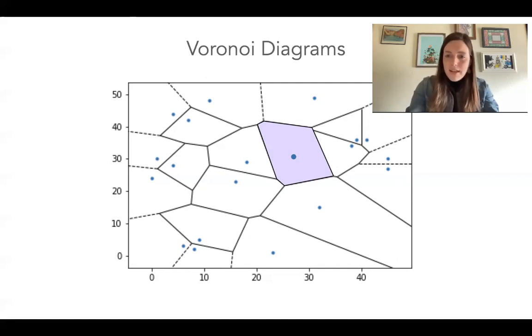And so Voronoi diagrams live naturally. For example, if all these sites were grocery stores and I lived in the lavender shaded region, I would go to the grocery store that's the blue point in the lavender shaded region because it's the closest grocery store to me. And the same thing goes for coffee shops or doctors offices or schools. Voronoi diagrams model our human way of life.